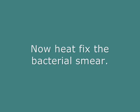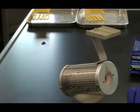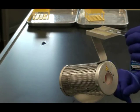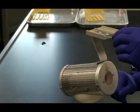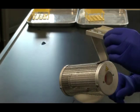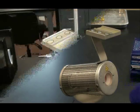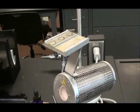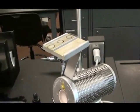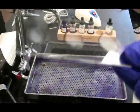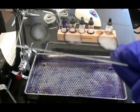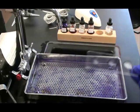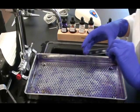Now I'm going to heat fix my bacterial smear. I very carefully move that slide to place it in the slide tray on top of the microincinerator. You need to be careful so the droplets of water don't run together. I have to wait about five or ten minutes until the bacterial smears are dried. Heat fixing kills the bacteria and sticks it to the slide so that I can now perform my Gram stain.